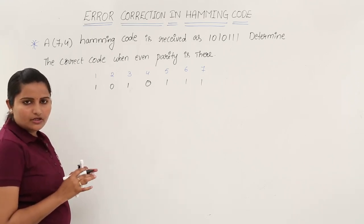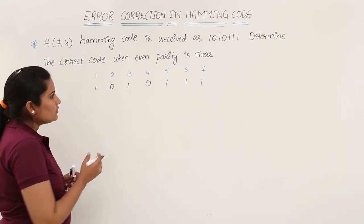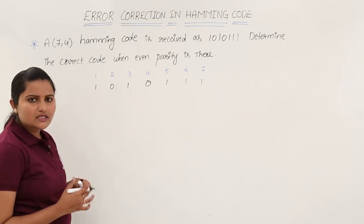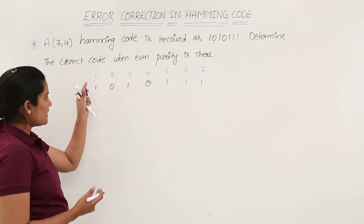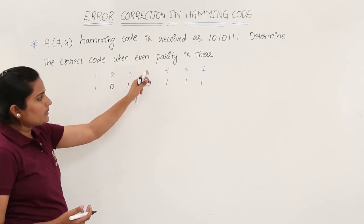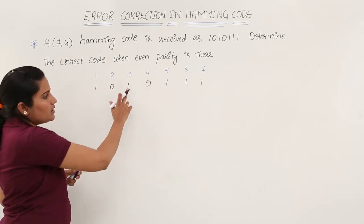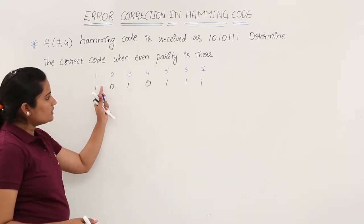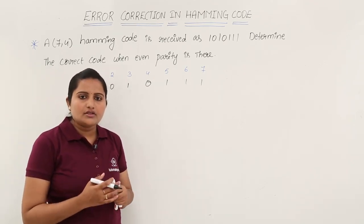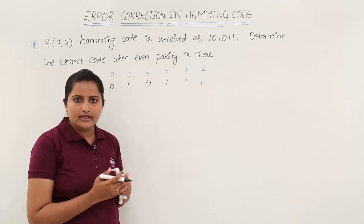After placing bits under position values, you need to identify the parity bit values. The parity bits are placed at power-of-2 positions: at 2^0 (position 1), 2^1 (position 2), and 2^2 (position 4). So the parity bits are 1, 0, and 0. The remaining 4 bits are the message bits. You need to determine which bit is in error.